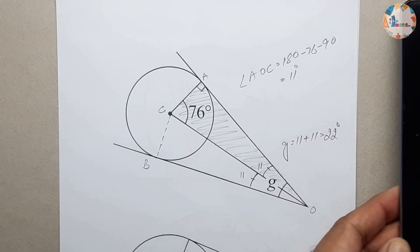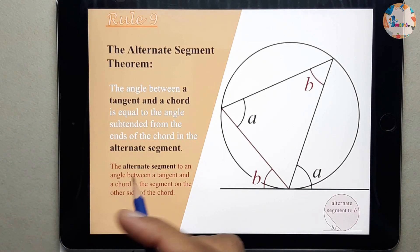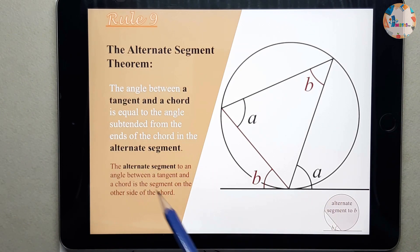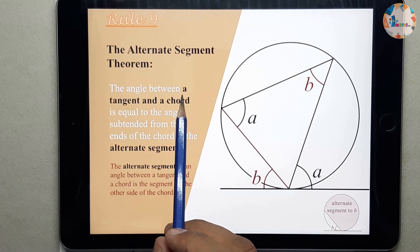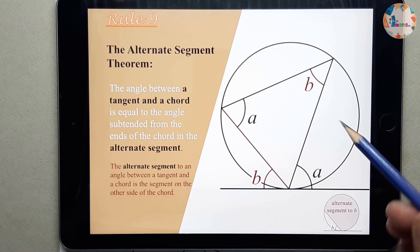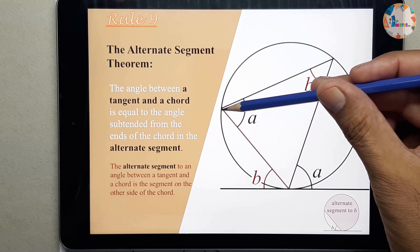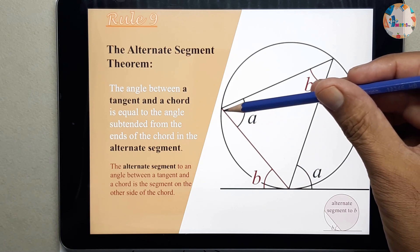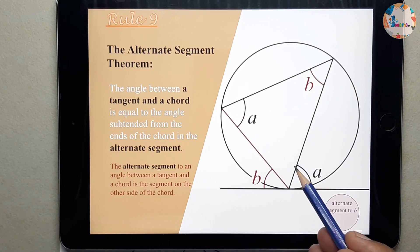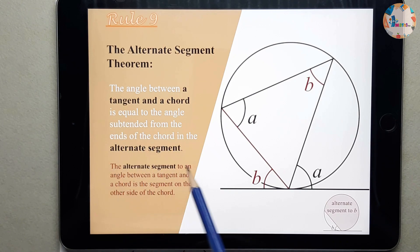Now we can go through the next rule, which is rule number 9. This is known as the Alternate Segment Theorem. The angle between a tangent and a chord — this is the tangent and this one is the chord — equals the angle subtended from the ends of the chord in the alternate segment.